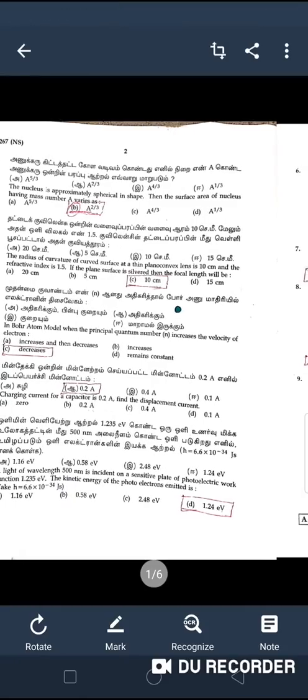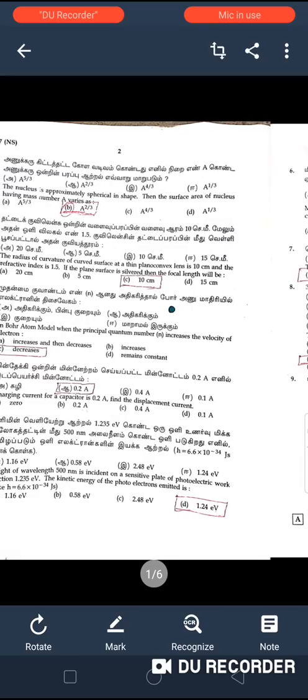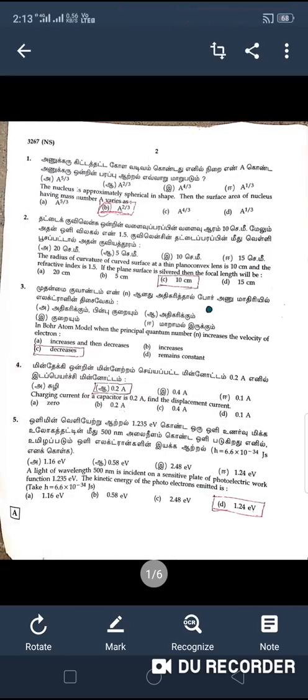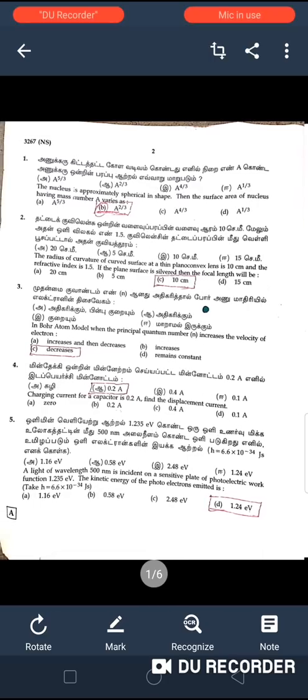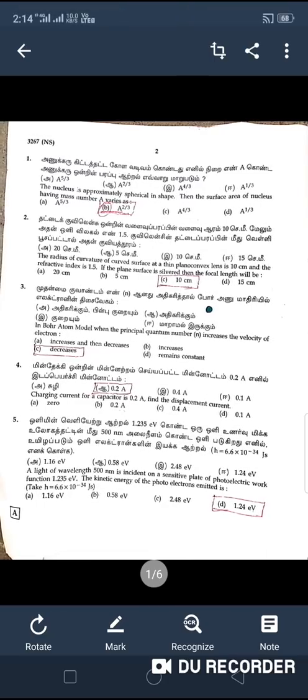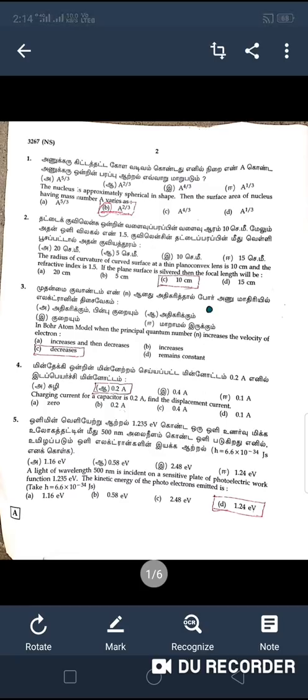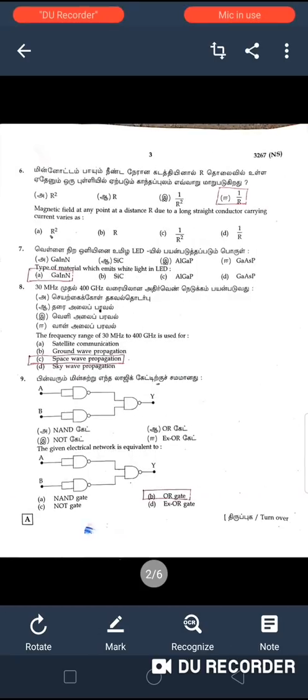First one: option B, A to the power 3. Second one: option C, 10 cm. Third one: option C. Fourth: 0.2 ampere. Fifth: 1.24 electron volt. Sixth: 1 by R, option D. Seventh: option A, gallium indium. Eighth: space wave propagation. Ninth: OR gate.